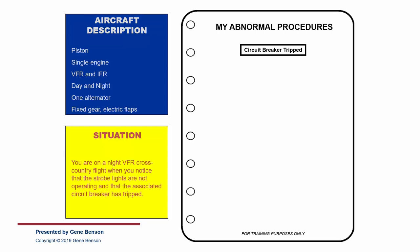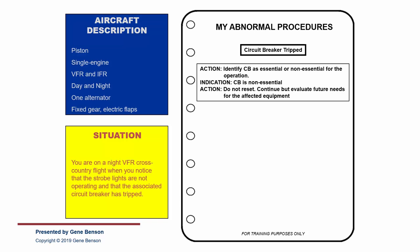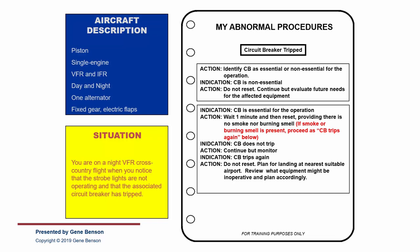Our first action is to identify which breaker has tripped and decide if it is essential or not for our operation. The action for a non-essential circuit breaker is to leave it popped and continue on, but to evaluate our future needs. If the circuit breaker is essential, wait at least a minute and attempt to reset if there is no smoke or burning smell. If after a reset the circuit breaker does not trip again, continue but monitor. If it trips again, do not reset it again — plan for a landing and review what equipment will be inoperative and how to deal with that situation.